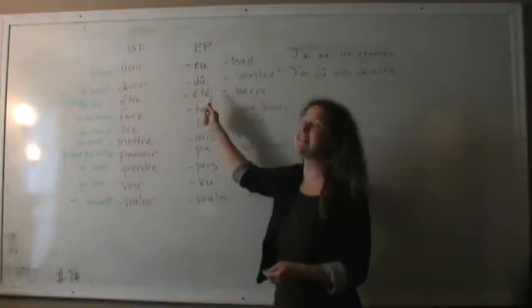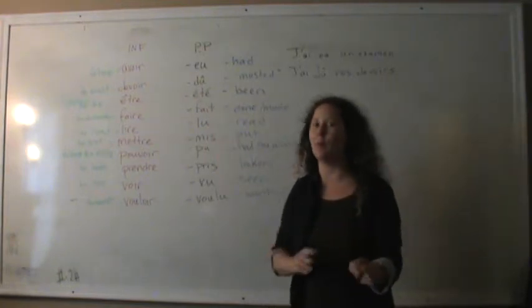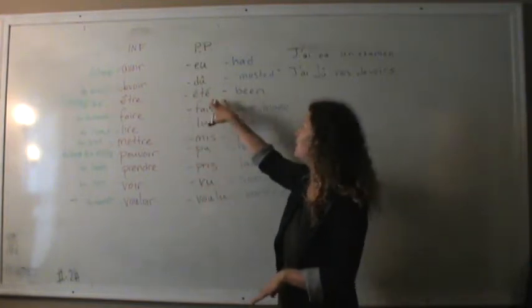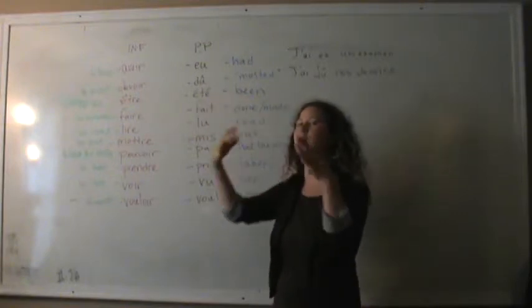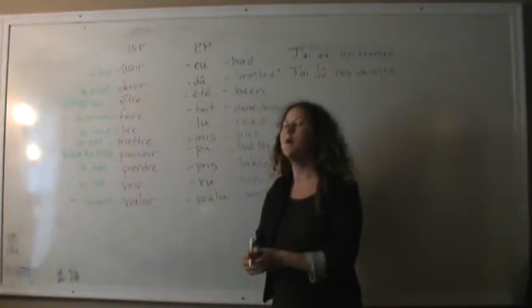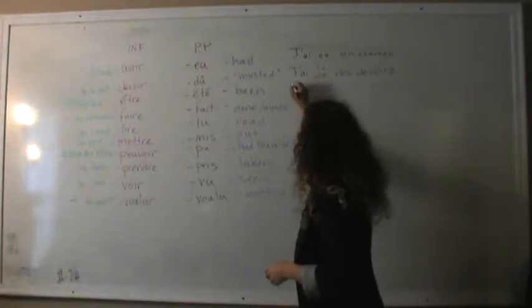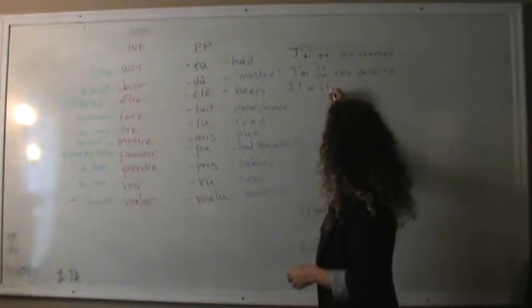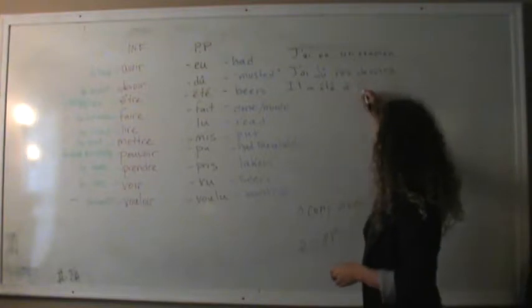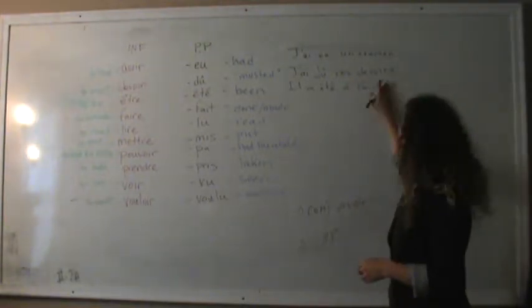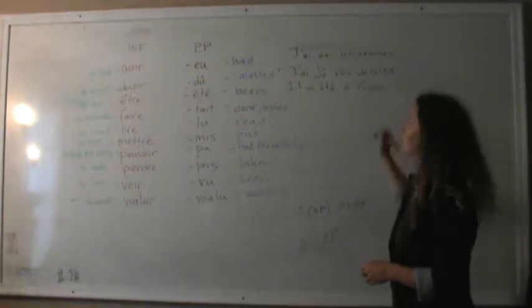Être becomes été. Now, you remember me saying earlier, way long ago, hey, that's the same word for summer. It is the same word for summer. You just have to realize what context you're doing in it. So if I want to say, yeah, he has been to Paris. Oui. Il a été à Paris. He has been to Paris, if you spell it right. There we go.